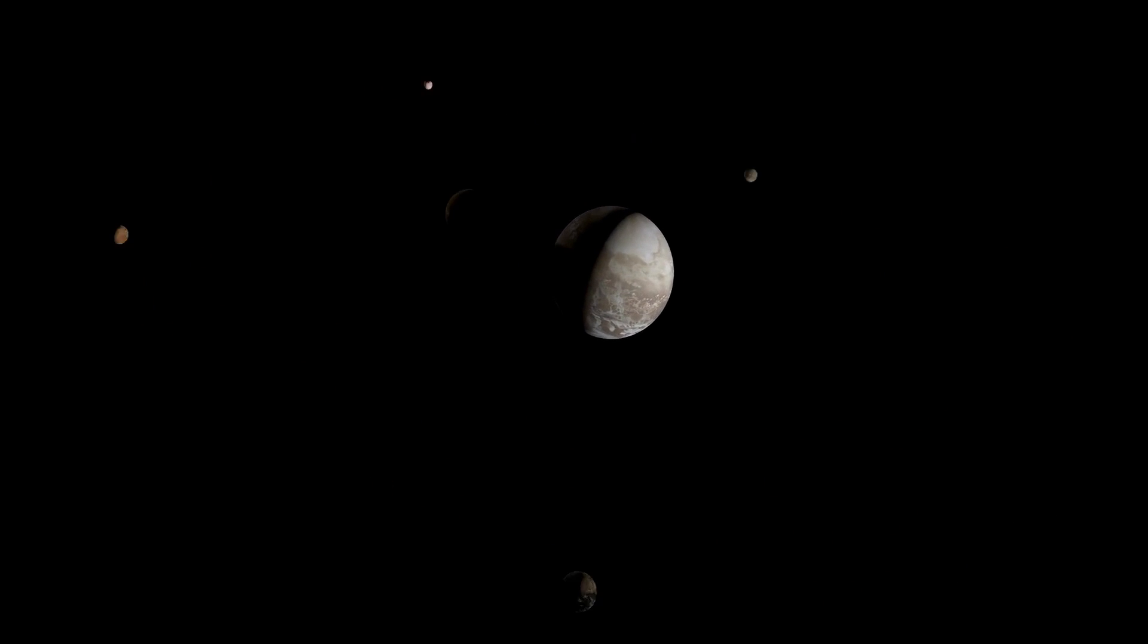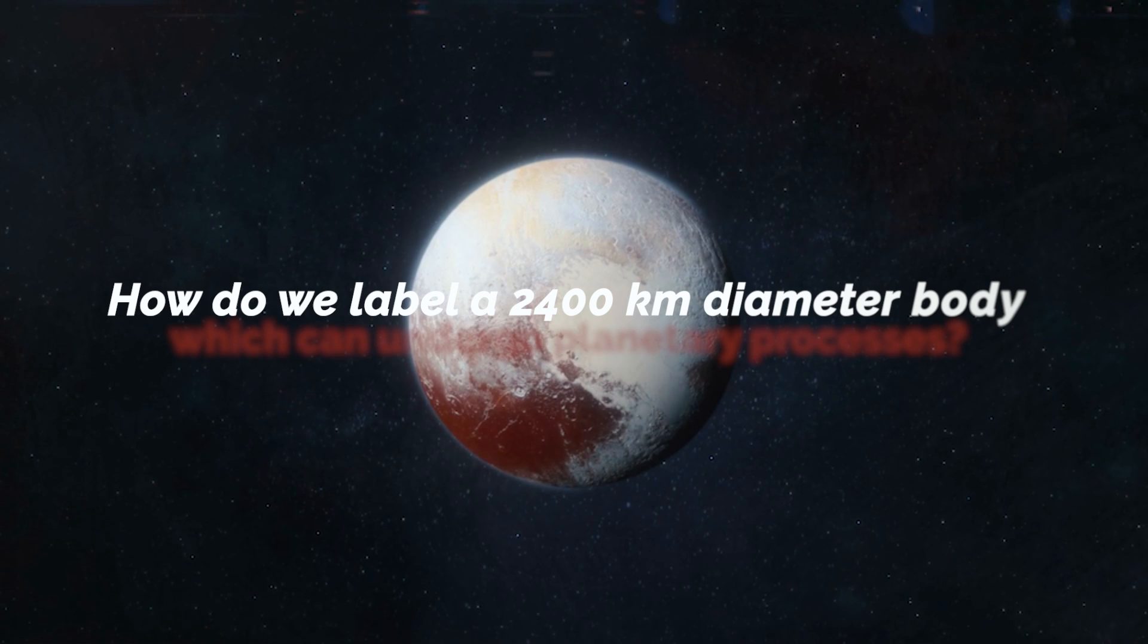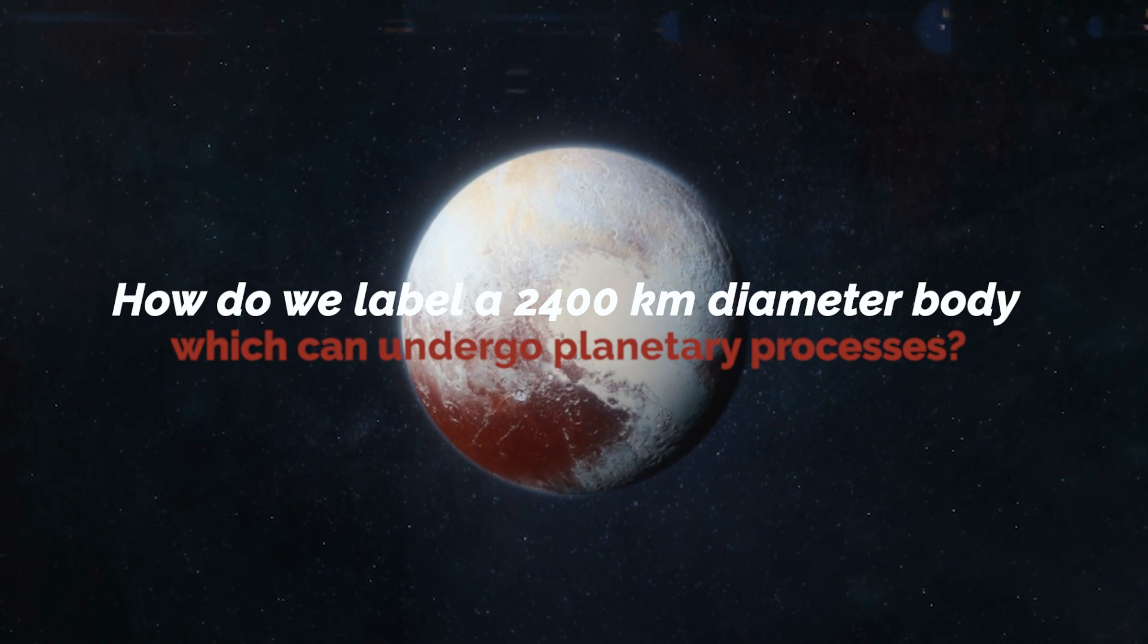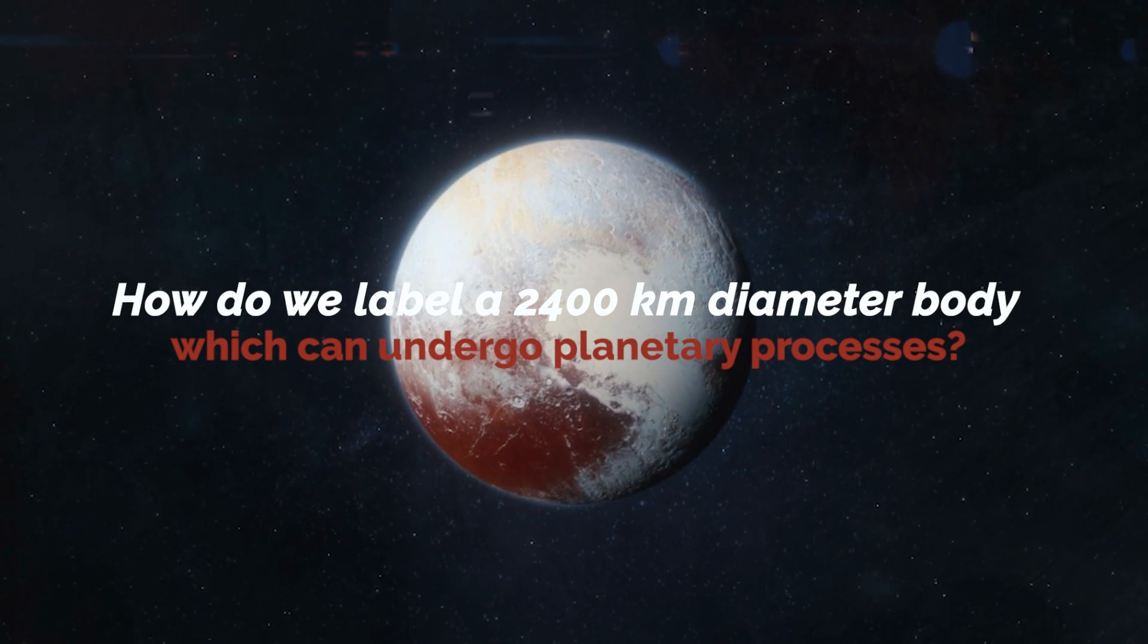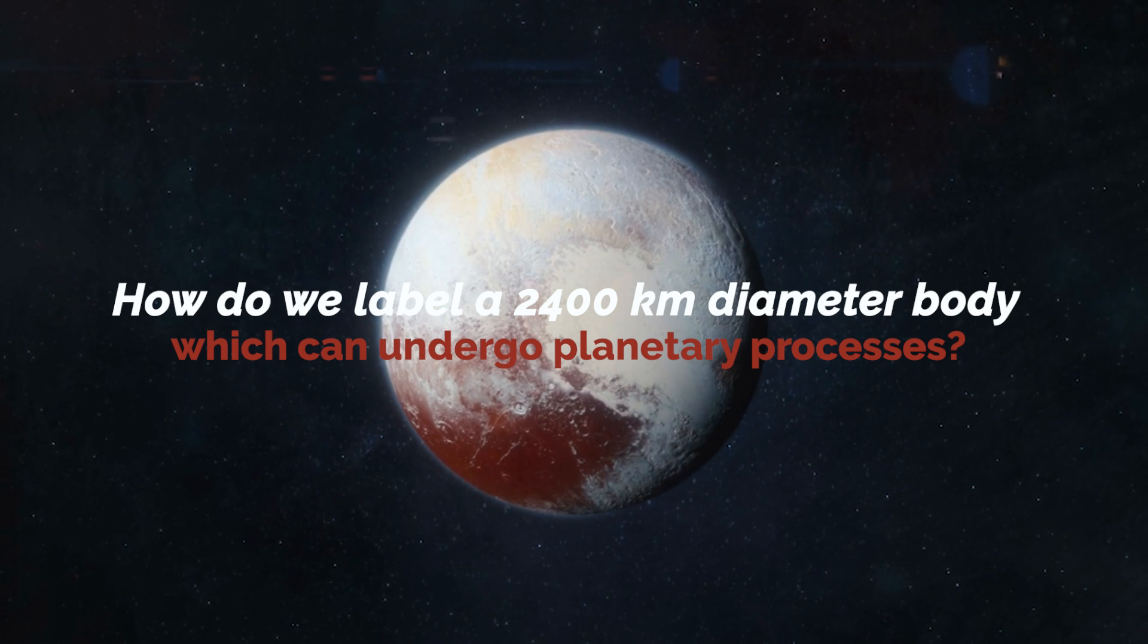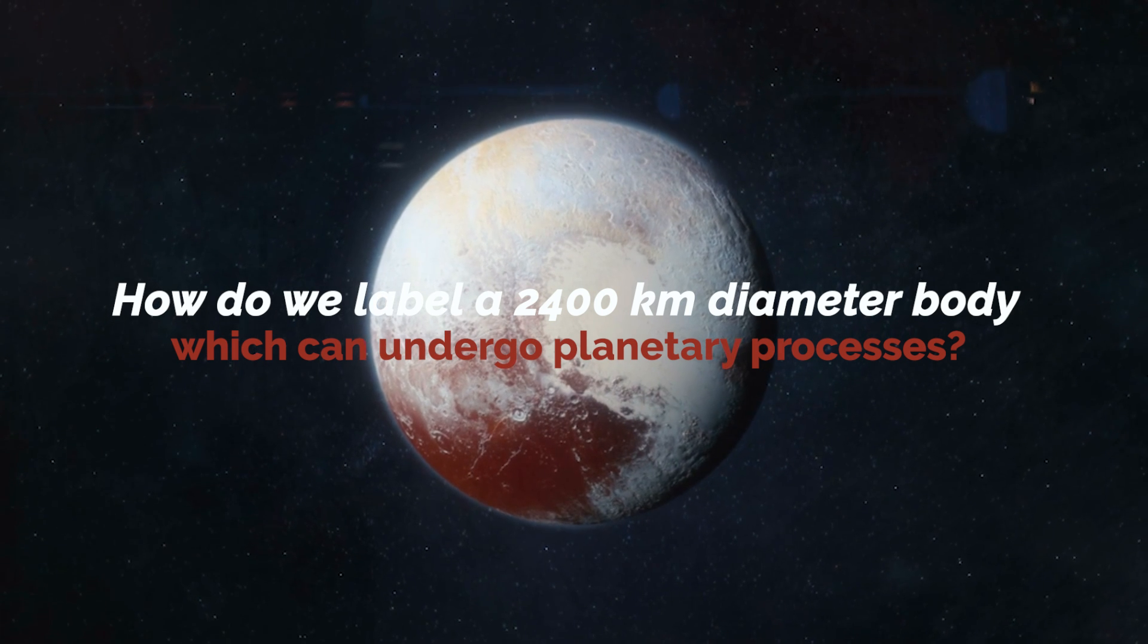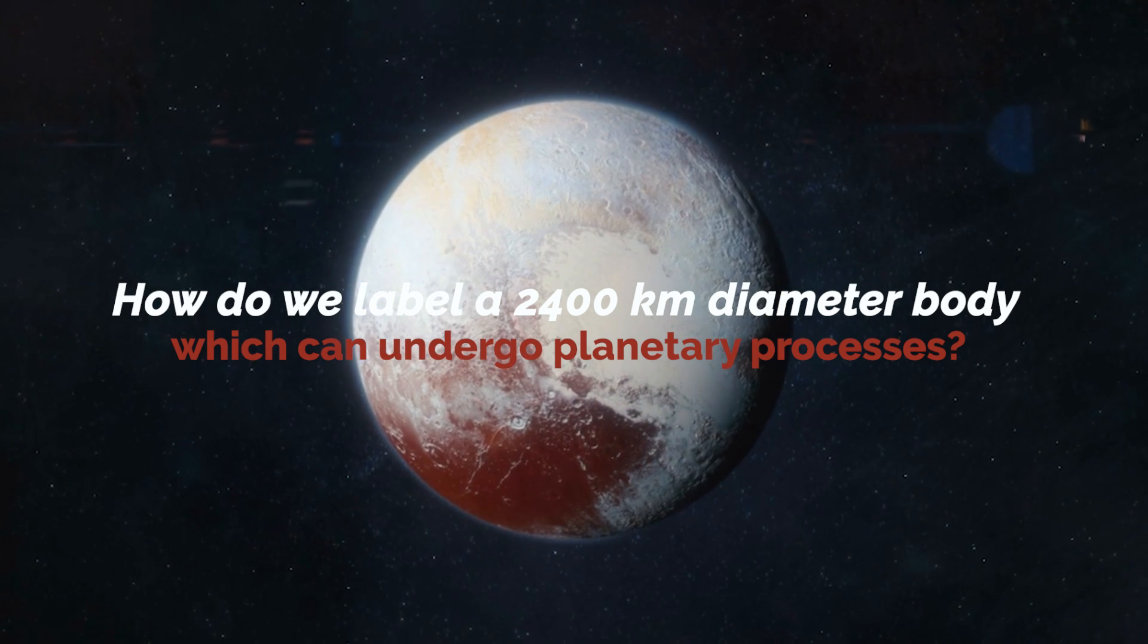So, folks, we ask you, how do we label a 2400 kilometer diameter body that is large enough to undergo planetary processes such as the formation of a molten core, persistent volcanism, and even the presence of an atmosphere?